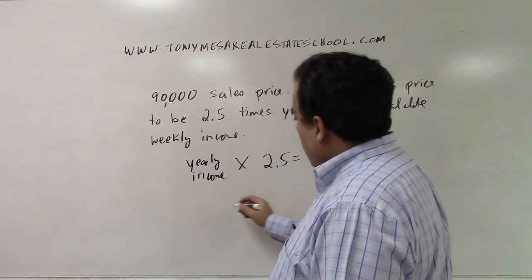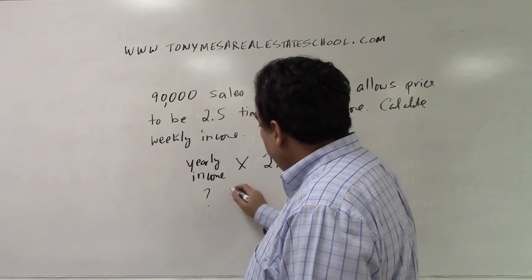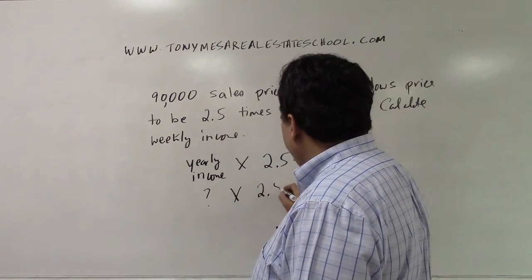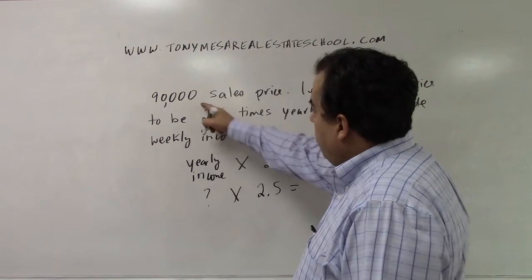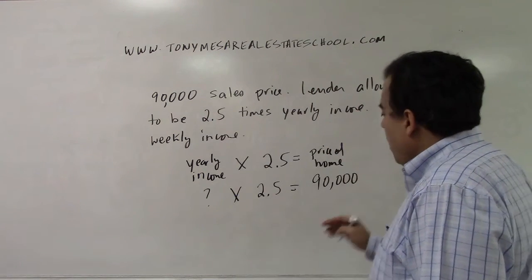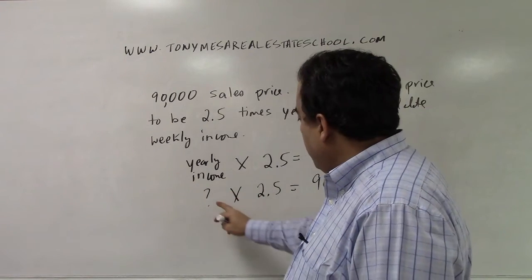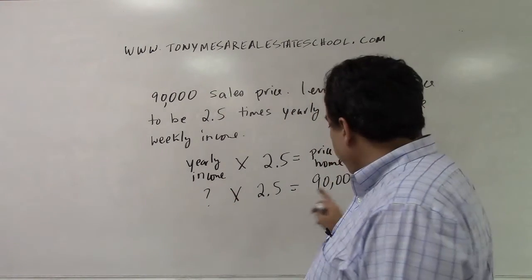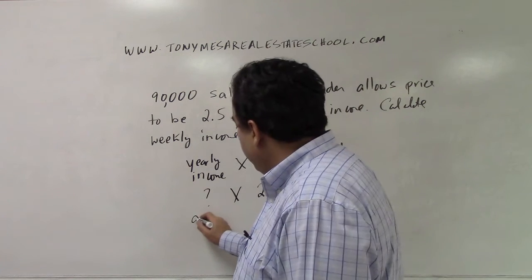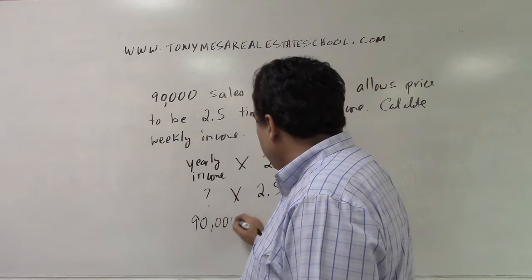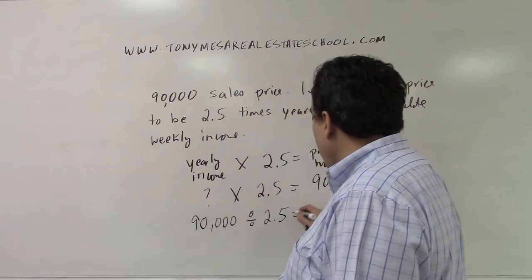So here, what do we have? We don't know this number, we know times 2.5, the price of the home they told you $90,000. So they're going to let you buy a house that is 2.5 times what you make per year. This times this gives us this answer, that means we could take the answer, $90,000, and divide it by 2.5.